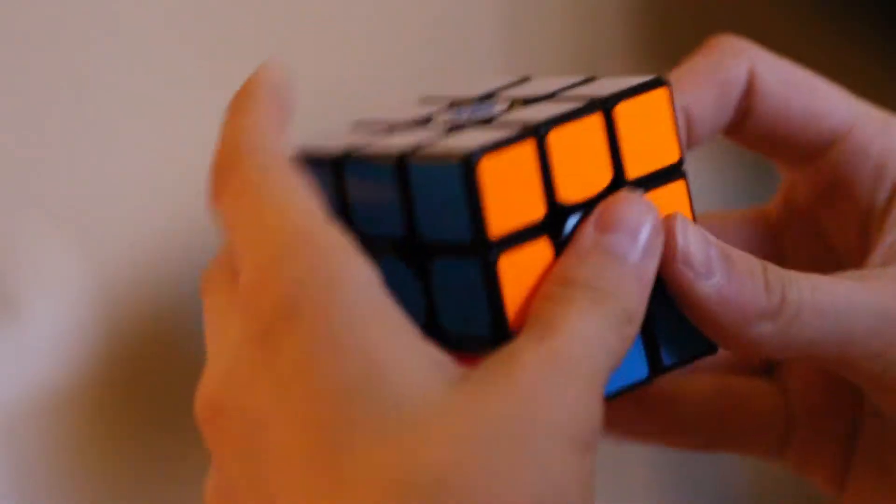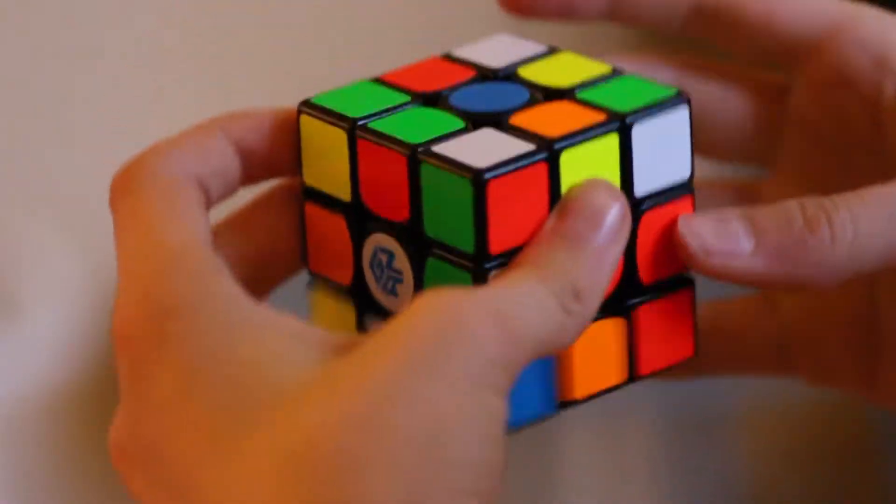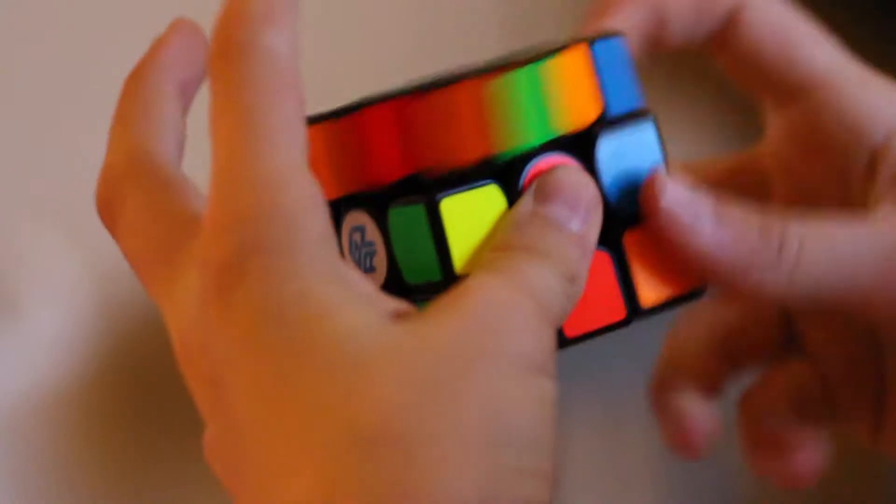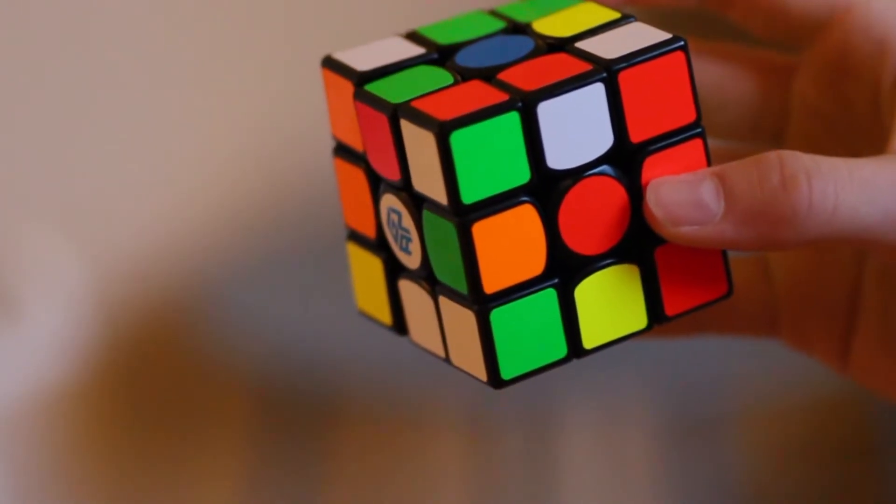Magneterna i Gans Air UM är förhållandevis starka jämfört med andra 303-kuber som också har magneter. Magneterna ger en väldigt stabil känsla till kuben vilket jag själv föredrar väldigt mycket.